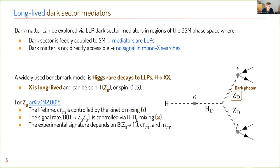A widely used benchmark model is Higgs-portal decay to LLPs: H to XX, where X is a long-lived particle of spin 1 or spin 0. For spin 1, we talk about the production of dark photons. In this model, the lifetime is controlled by kinetic mixing epsilon, the signal rate is controlled by the mixing of the Higgs and a dark Higgs kappa — controlling the branching ratio of the Higgs to pairs of dark photons — and the experimental signature depends on the branching ratio, lifetime, and mass of the dark photons.